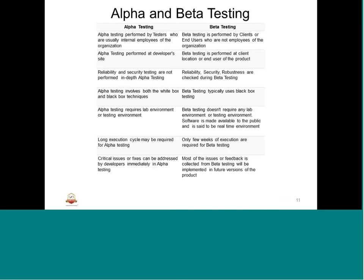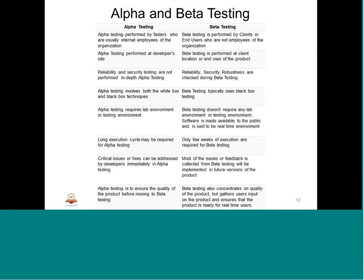The reason alpha and beta testing are covered here is that some embedded systems can be covered under this, especially in industry like telecom where they have OS like Android or Google. They release alpha test products and have a group of customers who will use it in a real-time environment - that type of testing is called beta testing.